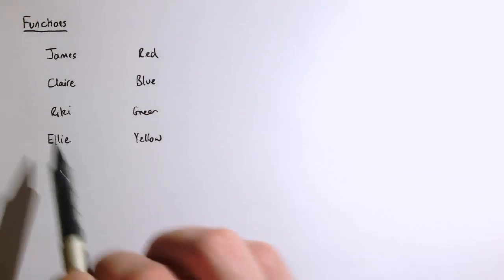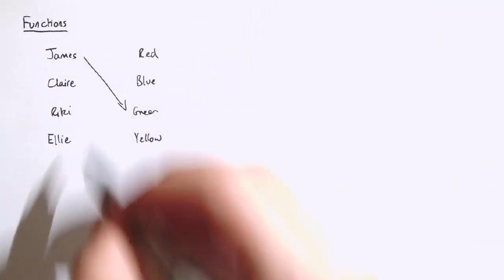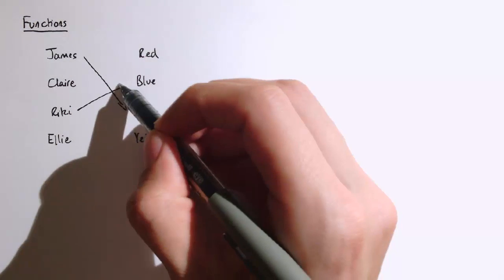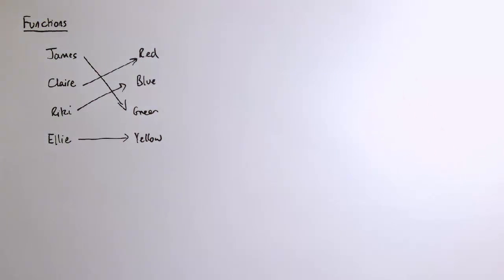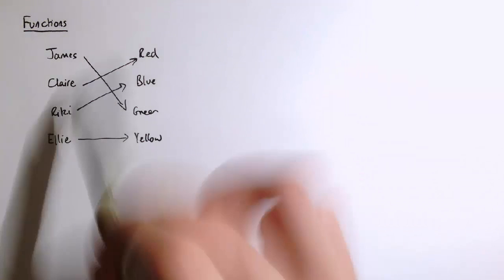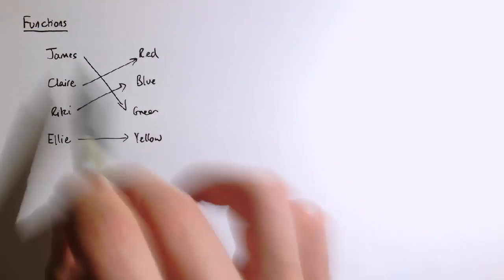I've got four people here: James, Claire, Ricky and Ellie. Perhaps James' favorite colour is green, maybe Ricky's is blue, Claire's is red and Ellie's is yellow.